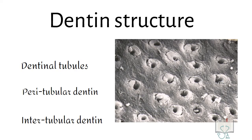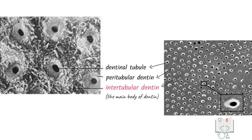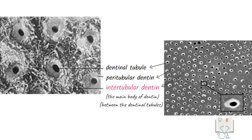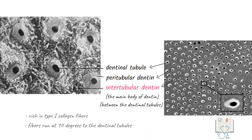Finally, the intertubular dentine. Intertubular dentine forms the main bulk of dentine or it is the dentine between the dentinal tubules. Its organic matrix is rich in type 1 collagen fibers which run at 90 degree to the dentinal tubules. It is less mineralized than peritubular dentine.